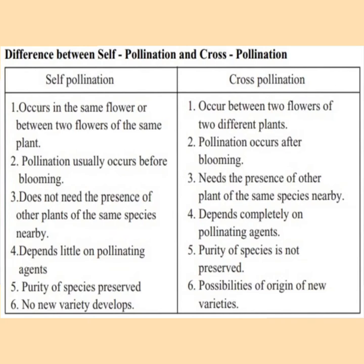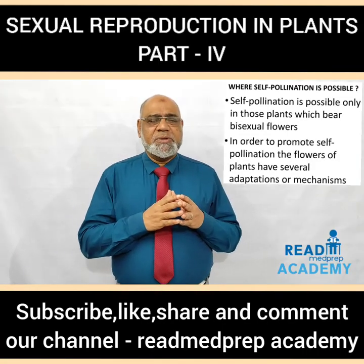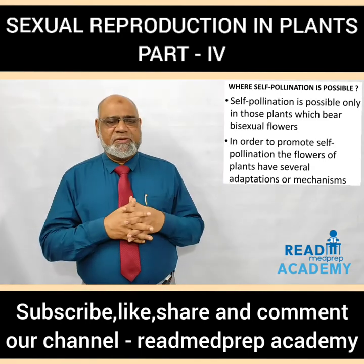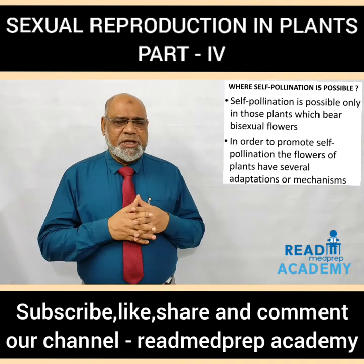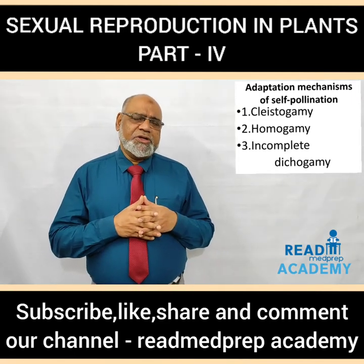In cross-pollination, possibilities of origin of new varieties occur. Self-pollination or autogamy — it's a Greek word; auto means self, gamos means marriage. According to a majority of botanists, the transfer of pollen on the stigma of the same flower is called self-pollination or autogamy. Self-pollination is possible only in those plants which bear bisexual flowers. In order to promote self-pollination, the flowers of plants have several adaptations or mechanisms.